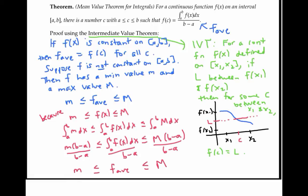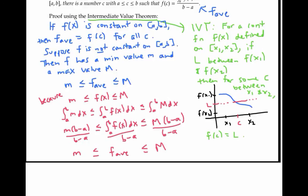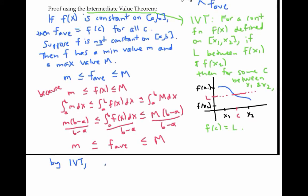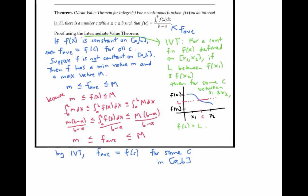Now I just need to apply the intermediate value theorem with f's average value as my number L, and little m and big M as my values of f of x1 and f of x2. The intermediate value theorem says that the average value of f is achieved by f of c for some c in between x1 and x2, and therefore for some c in my interval a to b. And that proves the mean value theorem for integrals.